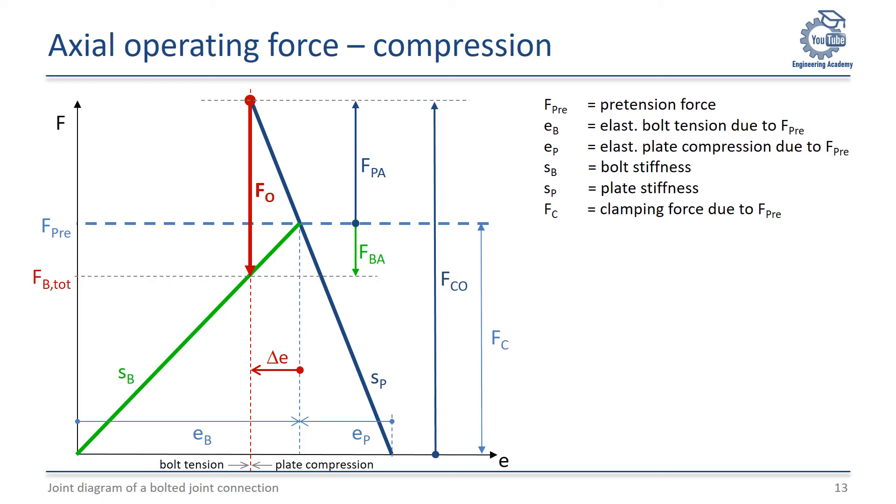The bolt force decreases proportionally to the stiffness SB by the amount of FPA to the new lower level FB total. The plates are compressed additionally by FPA, which increases the clamping force in the gorging to a new much higher level FCO.